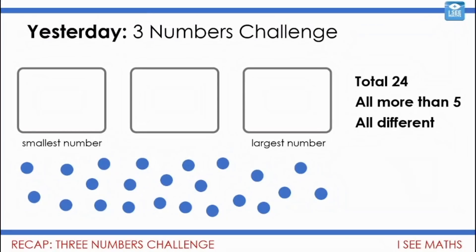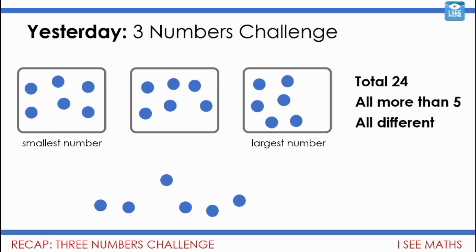Let's have a look at yesterday's challenge, the three numbers challenge. We need to find three numbers with a total of 24. All the numbers had to be more than five and all the numbers had to be different. I've made three boxes to show what the numbers could be and some circles that I can put in those boxes to help me break this down. One system you could have is to start off by putting six in each box. Then you know that each number will be definitely more than five.